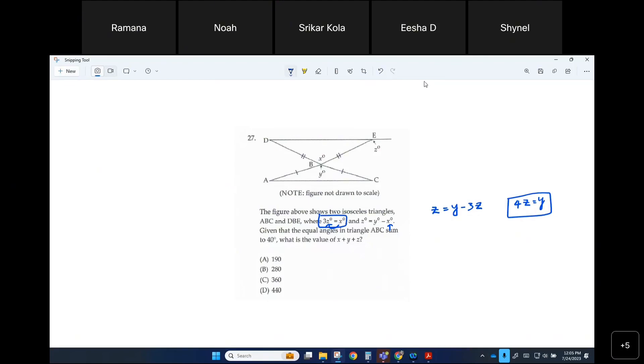Okay, and he said given the equal angles in triangle ABC, now can you tell me what are the equal angles in triangle ABC? By the way, what kind of triangle is ABC? Equilateral triangle? Are you sure it's equilateral ABC? Exactly, only two sides are equal. It is only isosceles, correct? Yeah. That means angles opposite to those equal sides would be equal.